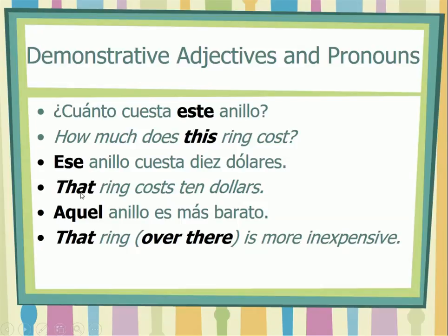Ese means 'that.' Aquel anillo es más barato — that ring over there is more inexpensive. Now, aquel is something we really don't have in English. In English, we generally have 'this' and 'that,' but in Spanish we have an extra one — aquel — which means 'that one over there' or 'that thing over there.'